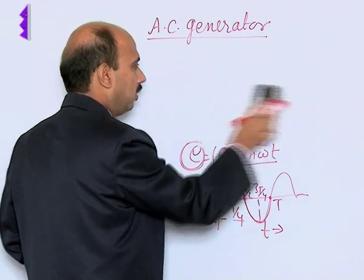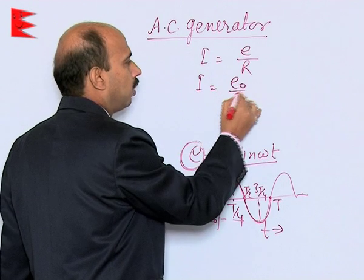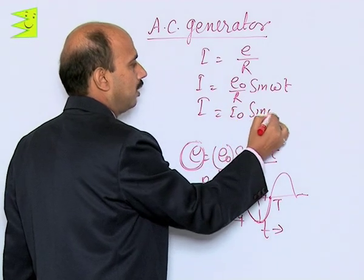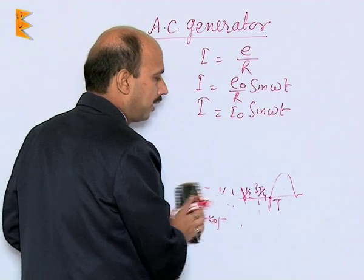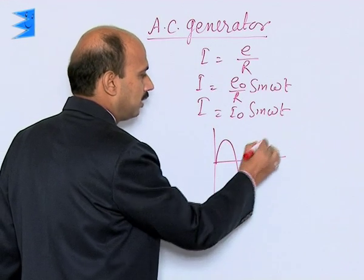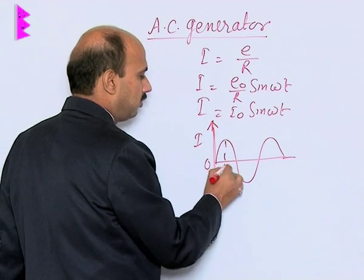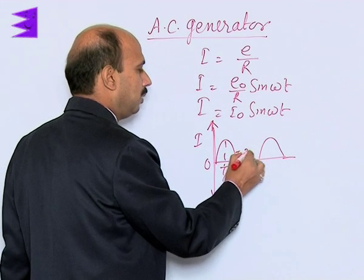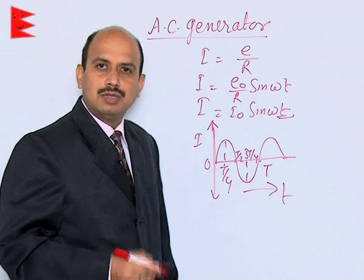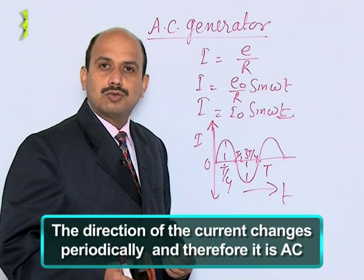We can also get the graph for the current. We know I = E/R, so I = (E₀/R) sin ωt, which gives I = I₀ sin ωt, where I₀ is the peak value of the current and I is the instantaneous value. Its graph is also a sine curve with I on the vertical axis and time on the horizontal axis, showing that the magnitude and direction of the current change periodically — this is alternating current.